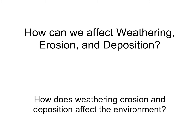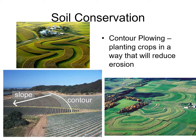So how can we affect weathering, erosion, and deposition? And how can it affect the environment? Soil conservation — we don't really have this problem here in Texas because it's really flat. But in areas like Japan and China, they have to do contour plowing, which means when they plant their crops they have to be careful what direction they put the rows in, because they want to conserve their soil. The rows are always perpendicular to the slope so that when it rains, the crop catches the water and the soil doesn't get washed away.